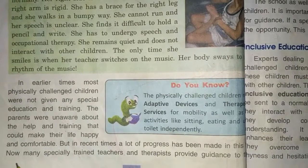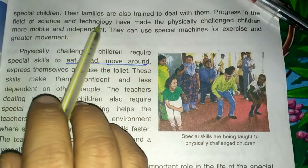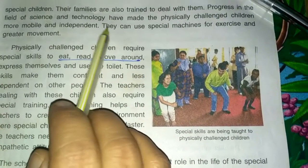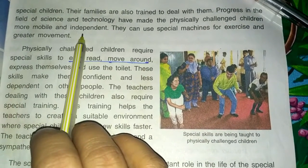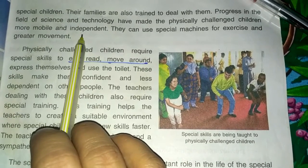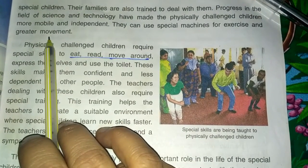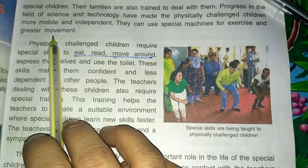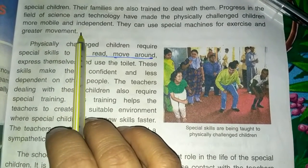In recent times, a lot of progress has been made in this field. Many specially trained teachers and therapists now provide guidance to special children, and their families are also trained to deal with them. Progress in science and technology has made physically challenged children more mobile and independent. Special machines for exercise, hearing aids, and braces are provided to support these children in every way possible.